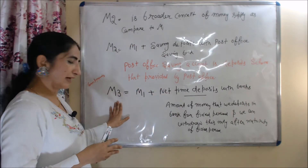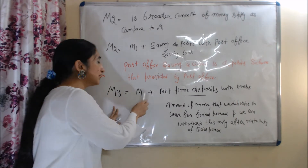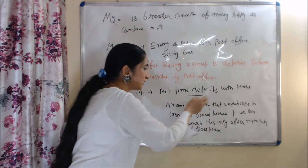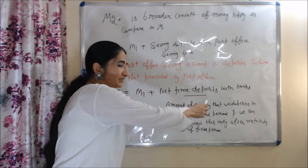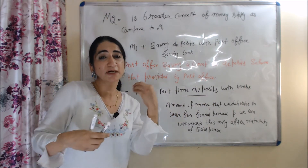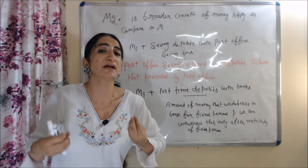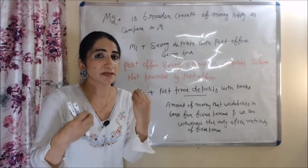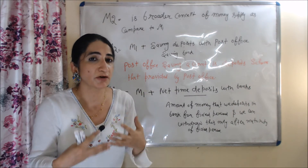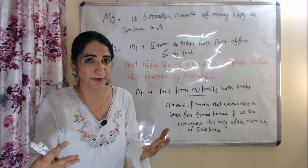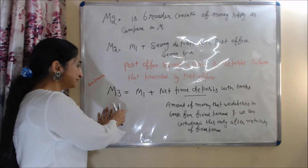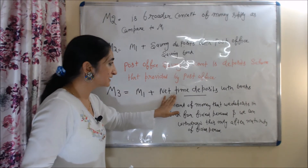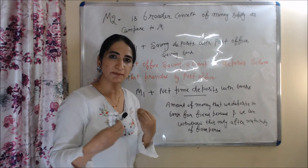Now we talk about M3. M3 is equal to M1 plus net time deposit with banks. Time deposit is the amount of money that we deposit in a bank for a fixed time period, and we can withdraw this amount only after maturity of the fixed time. So M3 includes all components of M1 plus net time deposit with banks.